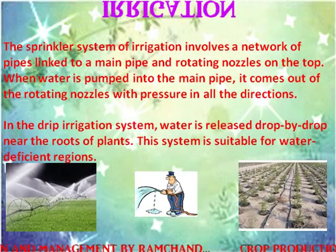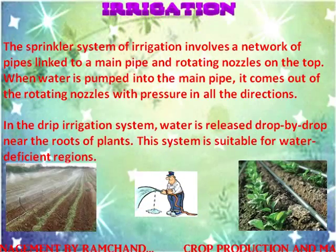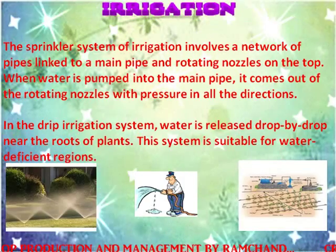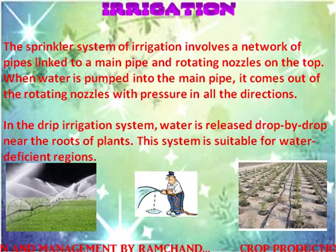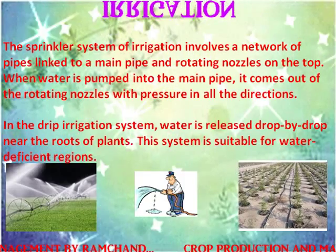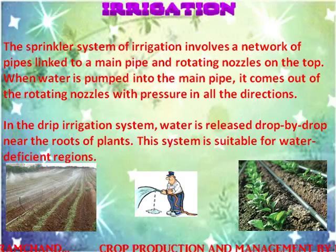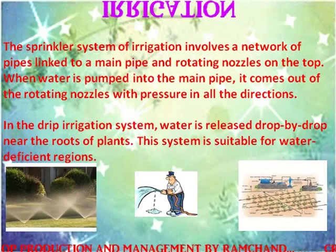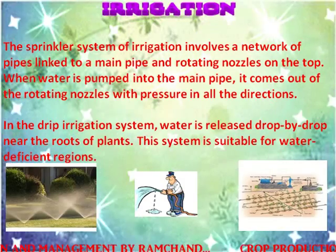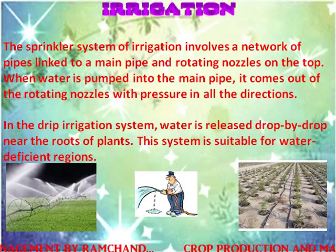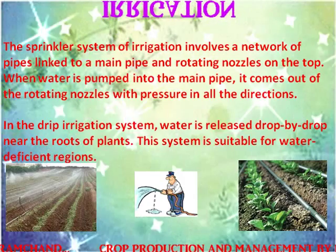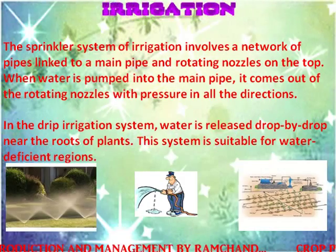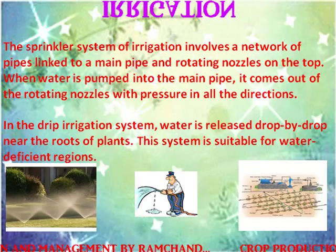Irrigation. The sprinkler system of irrigation involves a network of pipes linked to a main pipe and rotating nozzles on the top. When water is pumped into the main pipe, it comes out of the rotating nozzles with pressure in all directions.